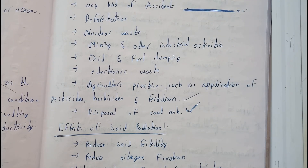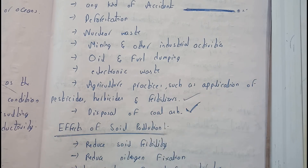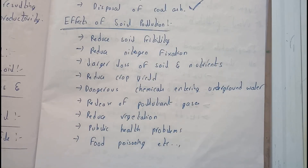Coal ash comes from the generation of electricity — when coal is burned to generate electricity, the leftover residue is a powder called coal ash.